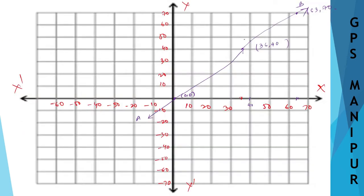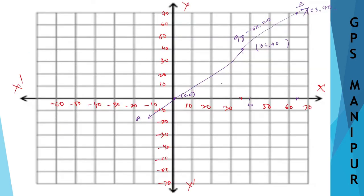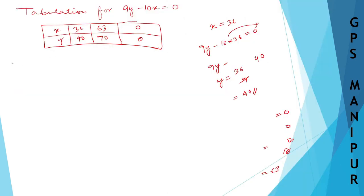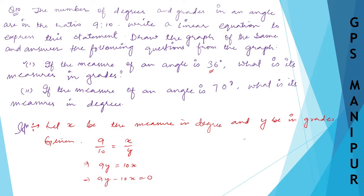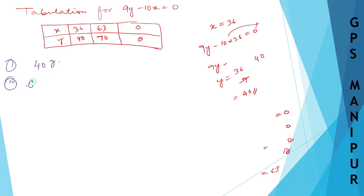Now answering the sub-questions. Part (i): if the measure of an angle is 36 degrees, what is its measure in grades? From the graph, when x = 36, y = 40, so the answer is 40 grades. Part (ii): if the measure of an angle is 70 grades, what is its measure in degrees? From the graph, when y = 70, x = 63, so the answer is 63 degrees.